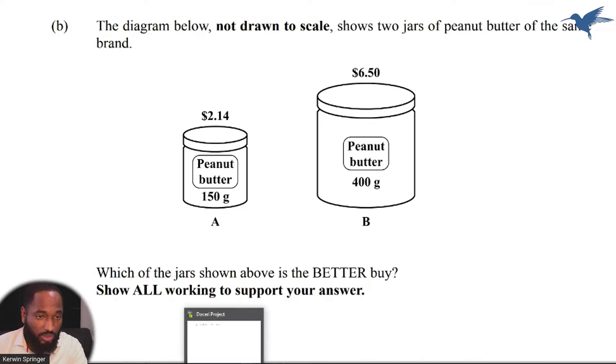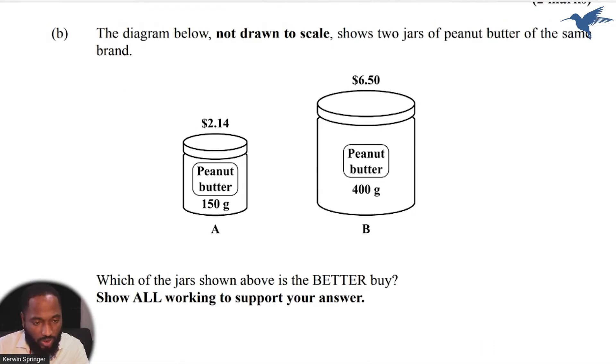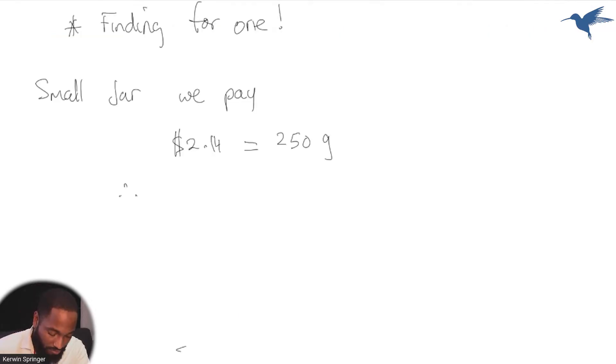In the small jar, we are paying $2.14 for 150 grams. So if I need to buy, if I'm paying one dollar, I can find out how much I'm getting for one dollar. 250 divided by 2.14. Let's compare this with the larger jar.